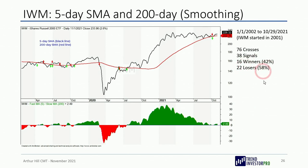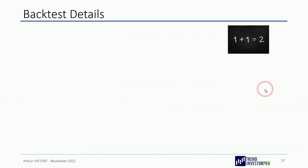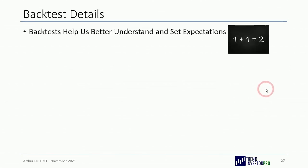Crunching the numbers in AmiBroker for the 5/200 cross: fewer signals — 76 crossings, 38 signals — yielding 16 winners. The winning percent went from 25% to 42%, with 22 losers at 58%. This is about what it's like for trend following: typically 40% winners and 60% losers.